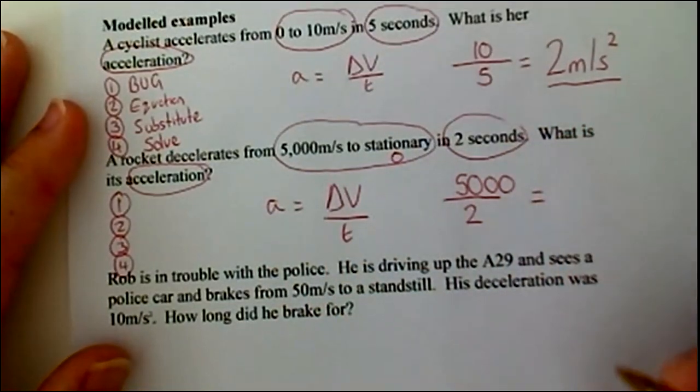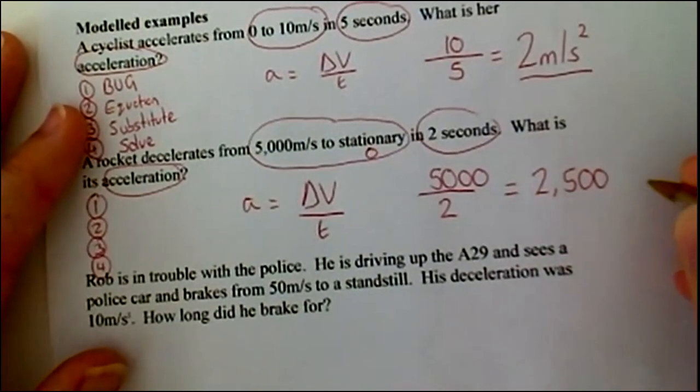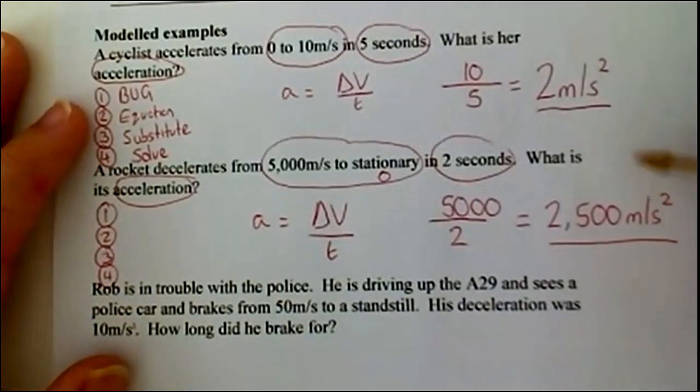That means, divide it, it's two thousand five hundred. And the unit is metres per second squared. Again, two nice questions for everyone to be able to do better at the end of the session.